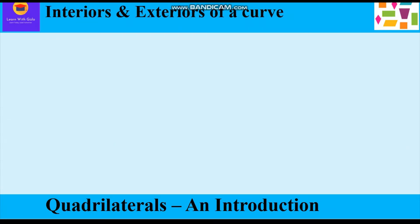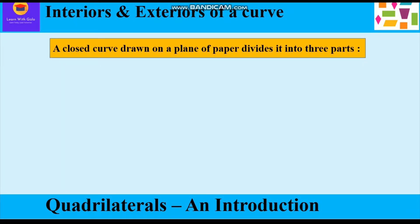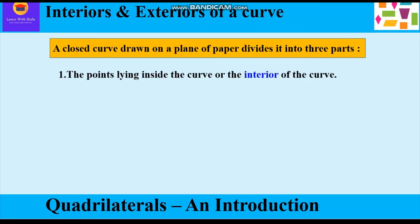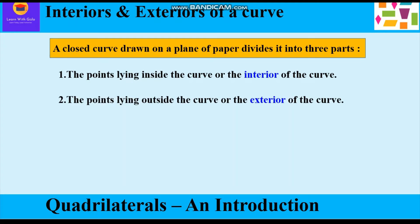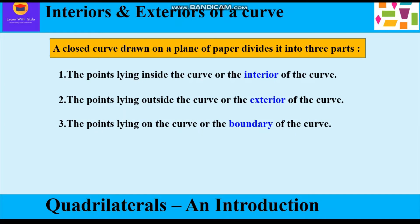Now let us learn about interiors and exteriors of a curve. A closed curve drawn on a plane of paper divides it into three parts: the points lying inside the curve form the interior, the points lying outside form the exterior, and the points lying on the curve form the boundary. As shown in the figure, point A lies in the interior, point B in the exterior, and point C on the boundary.